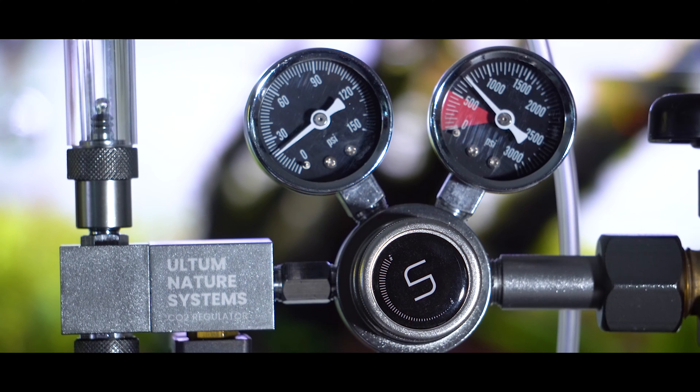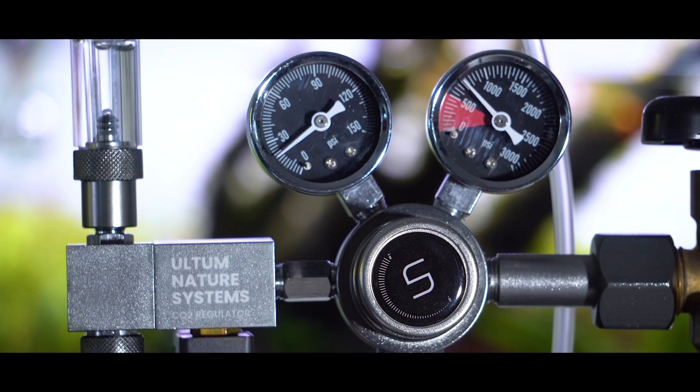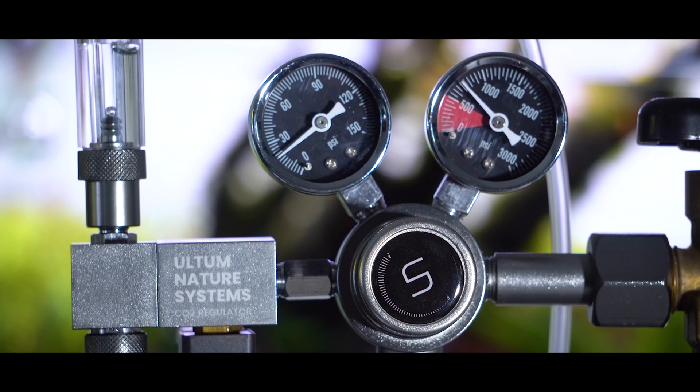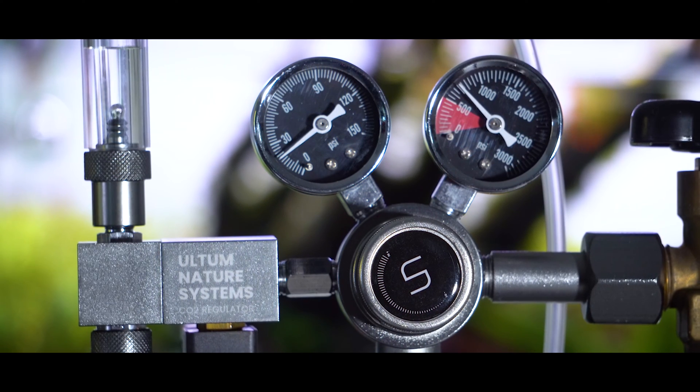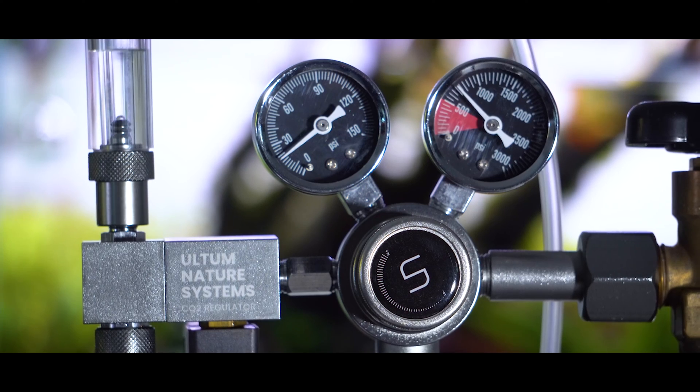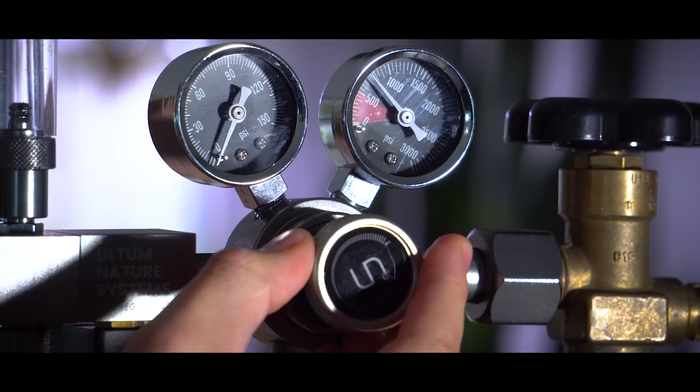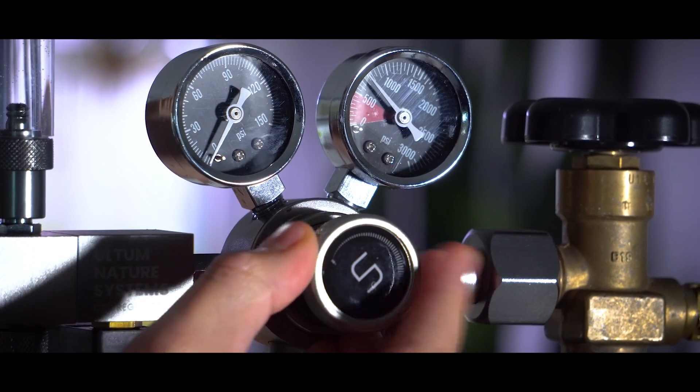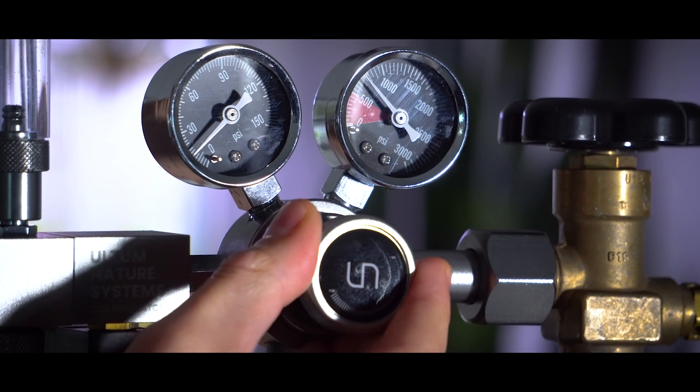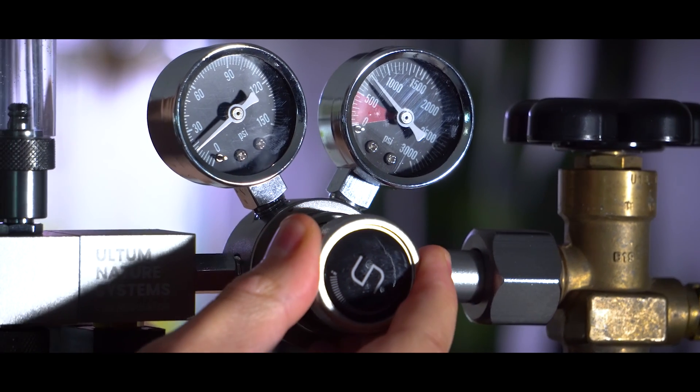Then we're going to adjust our working pressure. Working pressure is essentially how much pressure is kept inside of the regulator that you have to work with. The good thing about a dual stage regulator is that your working pressure is very consistent. So once you set a bubble counter, even as the pressure of the cylinder drops, the working pressure will maintain the same so that your bubble count remains the same until the cylinder is fully empty. Release the working pressure by adjusting the pressure knob clockwise towards the plus icon, and you want it to hit about 25 PSI.